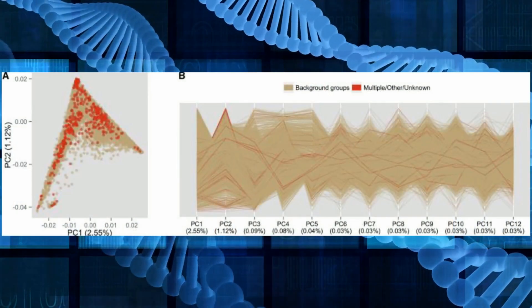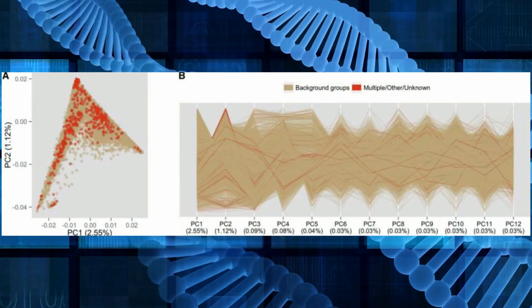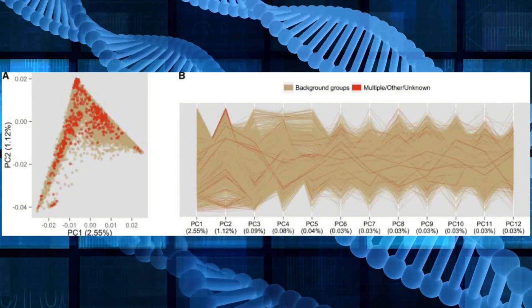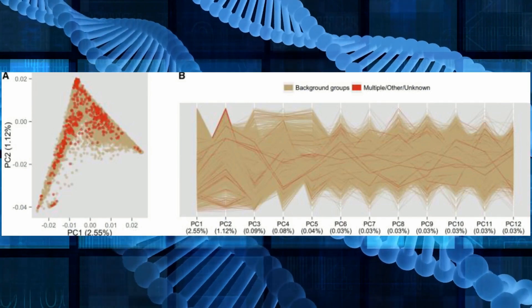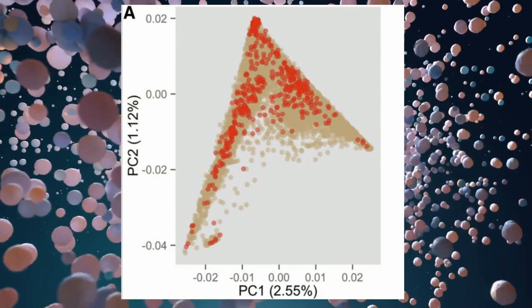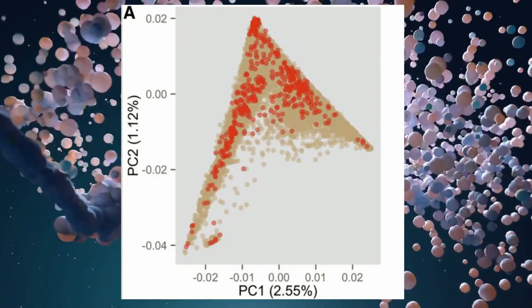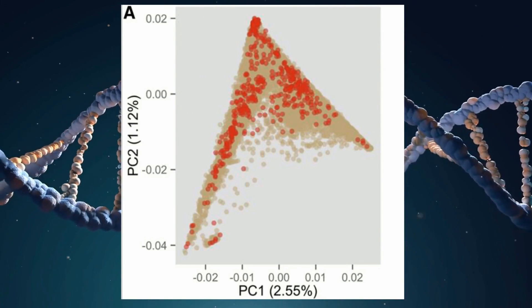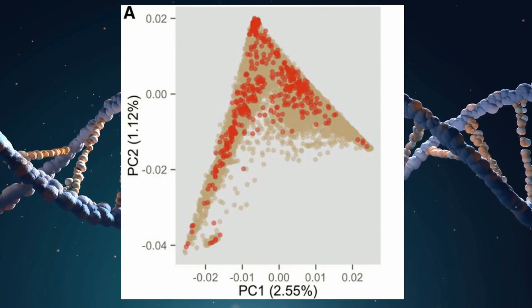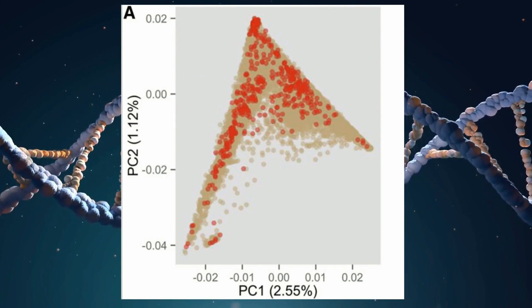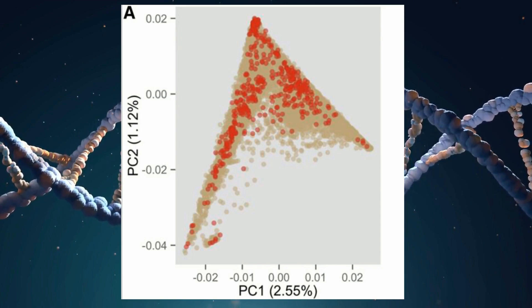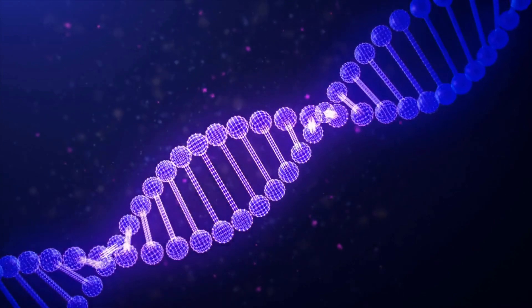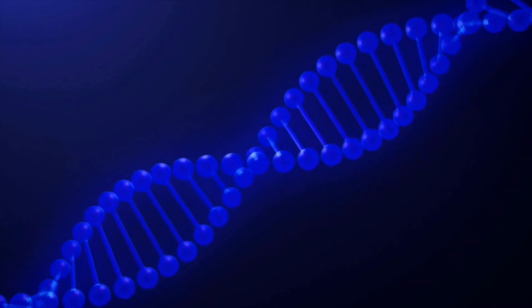To make sure that the genetic differences they observed weren't just due to people being related, the researchers used specific statistical methods. They found that using just the first few measures of genetic differences, called principal components (PCs), was enough to account for the major differences in ancestry among the groups. Adding more PCs didn't provide much extra benefit in understanding the genetic differences.